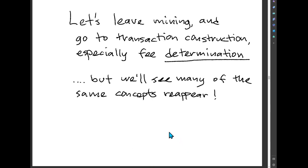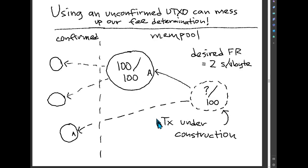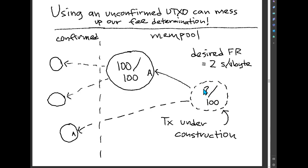Now let's talk about something that sounds unrelated but turns out to be very related: transaction construction by the wallet, and especially fee determination. How does the wallet decide what fee to put on a transaction it's creating? You'll see that many of the same concepts appear here as in mining. Let's take an example where we have one transaction already in the mempool, and we have a new transaction we're trying to construct — the dashed circle represents it's under construction. Part of creating a transaction is deciding on the fee. We know the size — let's say it's 100 vbytes.